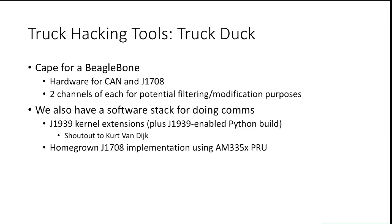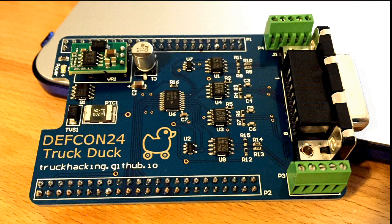We're releasing a new tool called the TruckDuck — it's a cape for the BeagleBone. It gives you two CAN channels and two J1708 channels, so you can do message filtering, recording, and simulating an ECU. We've got a custom OS image with J1939 kernel extensions built in. Haystack wrote Python tooling for it and also a J1708 implementation in the BeagleBone's PRU — little built-in microcontrollers. On the right side there's the diagnostic link connector — the big DB15 — two screw terminals, and it has power circuitry so you can power it from the bus.